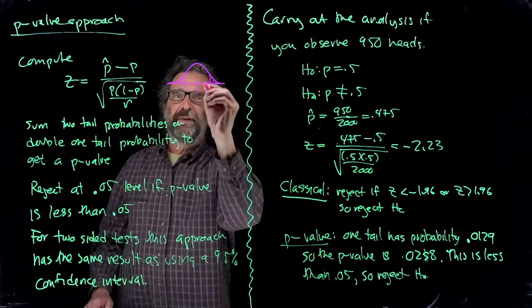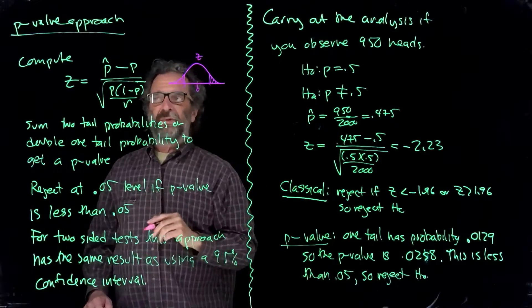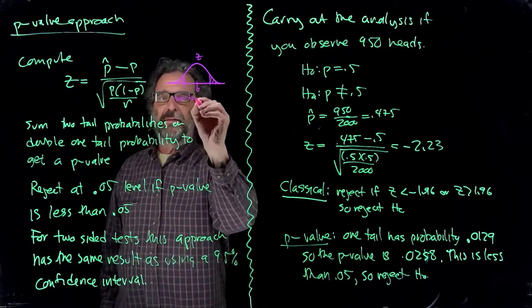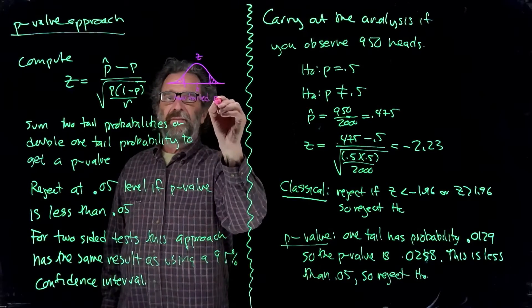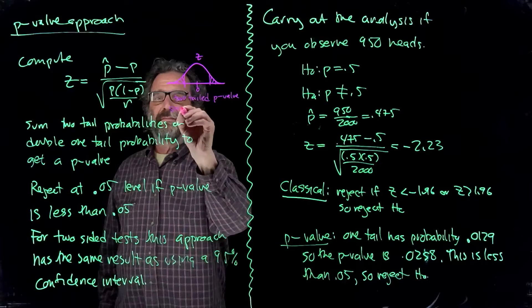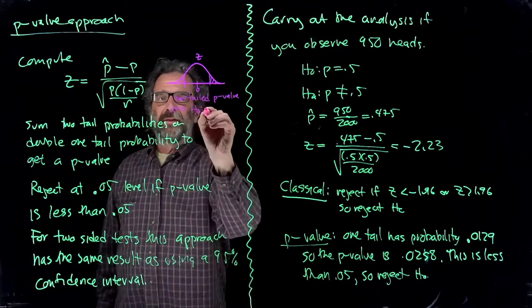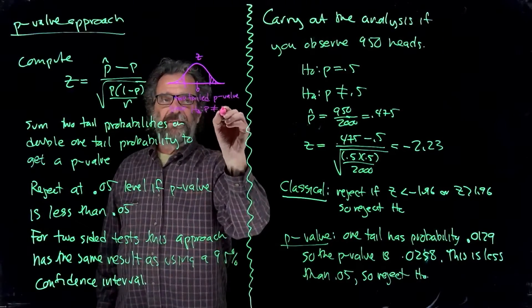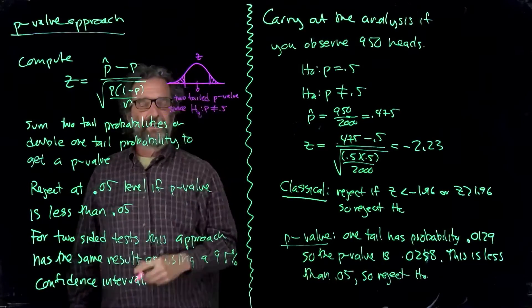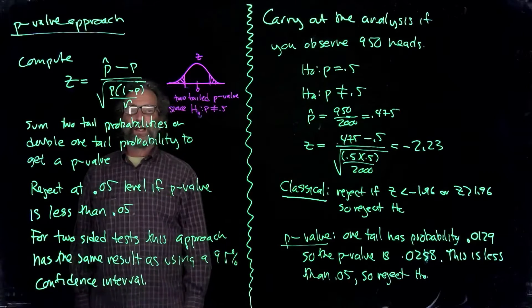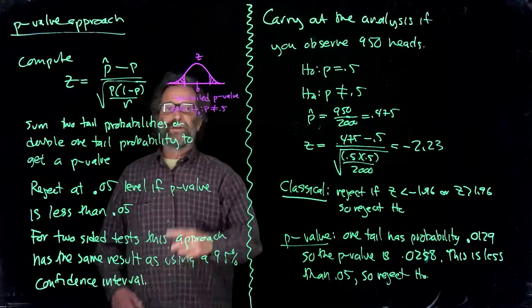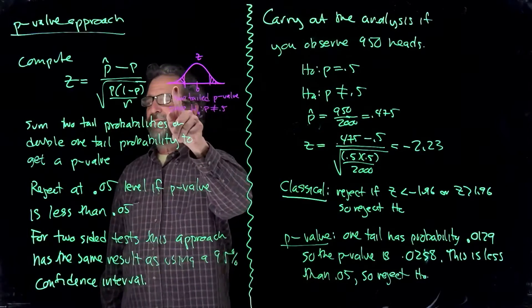So this is zero here. This is z. So that's a two-sided p-value, two-tailed p-value, since HA is p not equal to 0.5. It's a two-sided alternative because it's not equal to alternative. Either too many heads or too few heads make you think p is not equal to 0.5. So either one of those would cause you to leave the alternative.